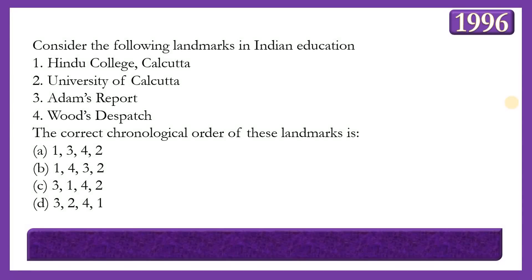Next question: Consider the following landmarks in Indian education: Hindu College Calcutta, Universities of Calcutta, Adam's Report, Wood's Dispatch. What is the correct chronological order? The answer is option B — 1, 4, 3, 2 — meaning Hindu College was established in 1817; William Adam's Reports in 1835-1838; Wood's Dispatch in 1854; and Calcutta University was established in 1857.